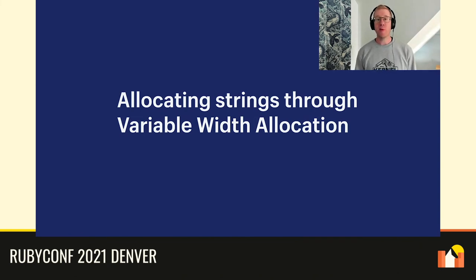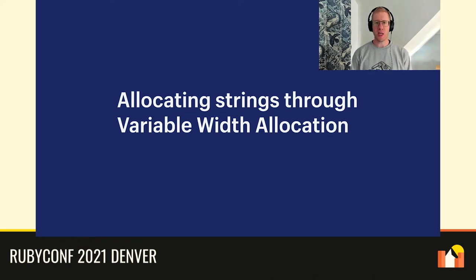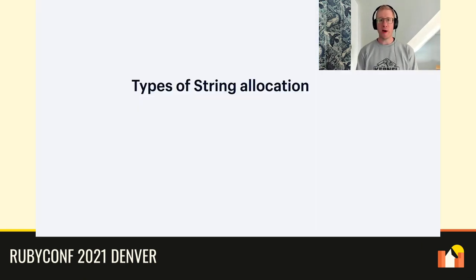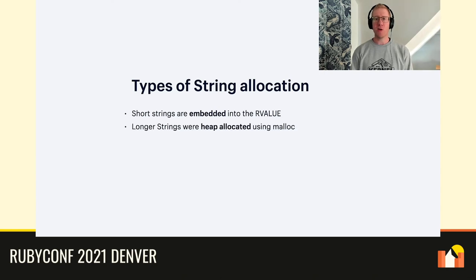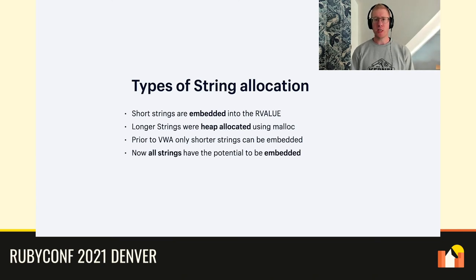In our latest pull request, we implemented variable width allocation for strings. However, unlike classes which only allocate a fixed-size data structure, strings are malleable and can change sizes, making them more challenging to deal with. Earlier in this talk, we spoke about the two types of Ruby strings: shorter embedded strings, where the string content is stored directly in the R-value itself, and longer strings that have their content separately allocated using malloc with just a reference stored in the R-value. Prior to variable width allocation, only strings shorter than 24 bytes could be embedded. As part of this project, we change string allocation to enable longer strings to be embedded.